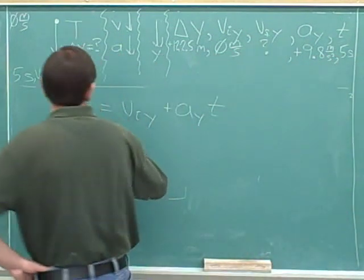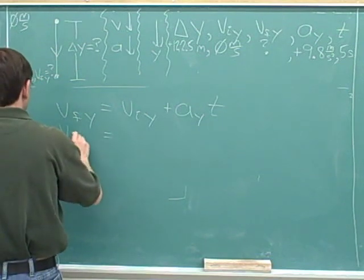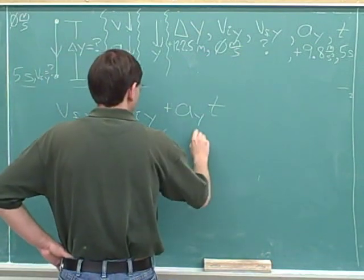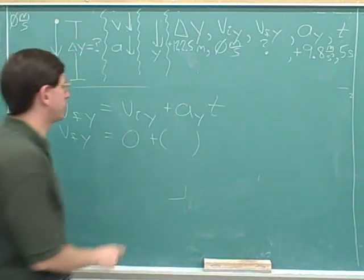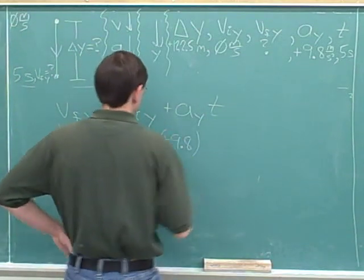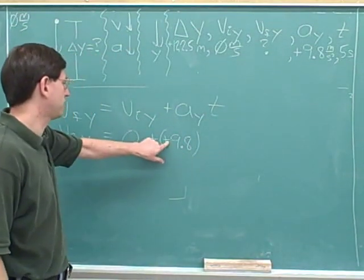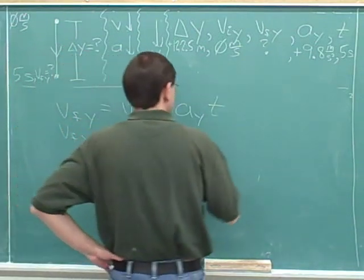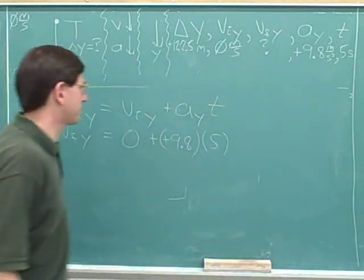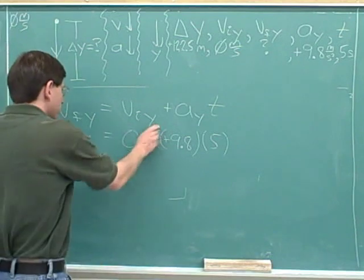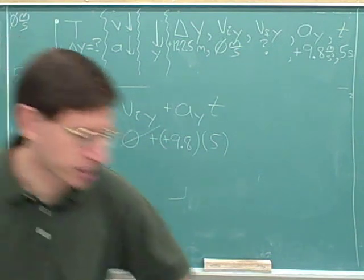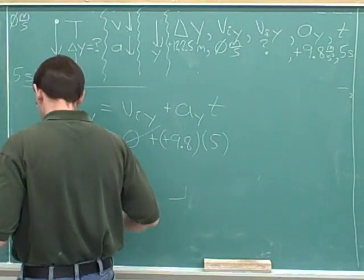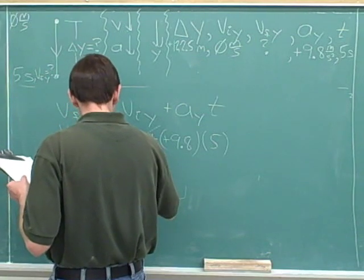Let's plug in. Final velocity we don't know, so we don't plug in for that. The initial velocity is 0. I'll put parentheses for the acceleration and plug in positive 9.8 — the parentheses help to separate the positive sign from the addition sign. Always be in the habit of putting in these parentheses when you insert signs and numbers. The time is 5. The 0 term drops out, and 9.8 times 5 is 49.